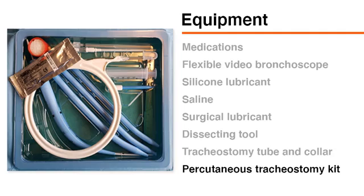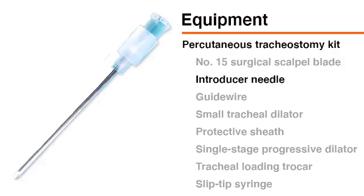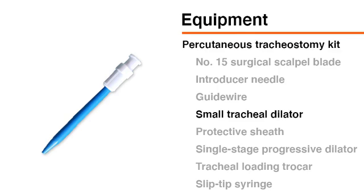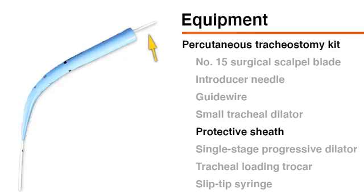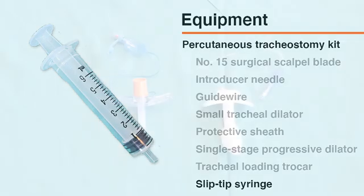A percutaneous tracheostomy kit generally includes a number 15 surgical scalpel blade, an introducer needle, a guide wire, a small tracheal dilator, a protective sheath, a single-stage progressive tracheal dilator, a tracheal loading trocar, and a small slip tip syringe.